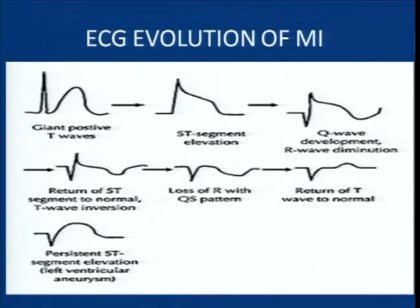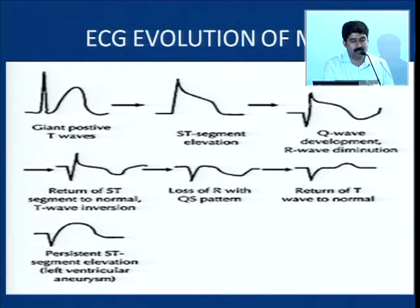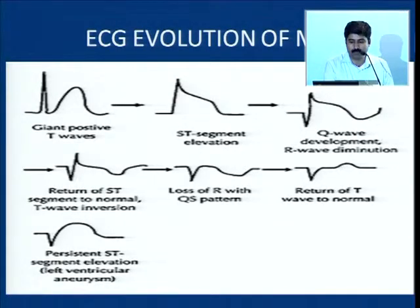To assess this, let's recap the evolutionary changes that happen in an ECG during an MI. First, there is the hyperacute T-wave or giant positive T-waves which reflects acute ischemia. Then the ST-segment goes up, producing the injury pattern. Then there is Q-wave formation, slow development of T-wave inversions, and the R-wave height may come down. Then the ST settles and the T-wave inversion becomes more deep. The Q-wave becomes really prominent. Sometimes, when a large amount of myocardium is infarcted, you have a QS wave and T-inversion which may persist.